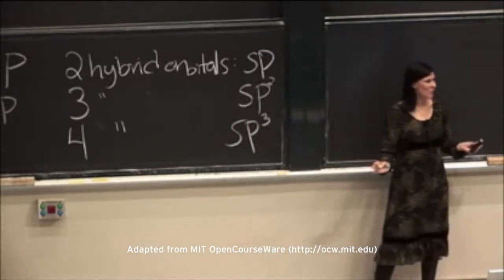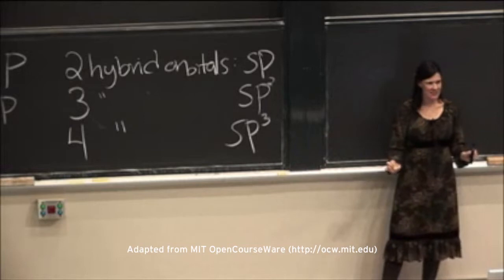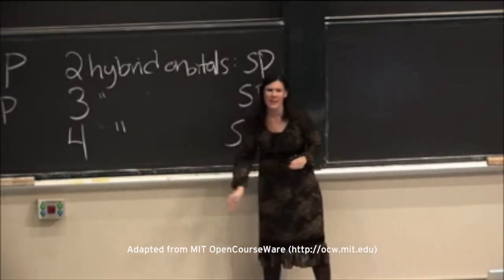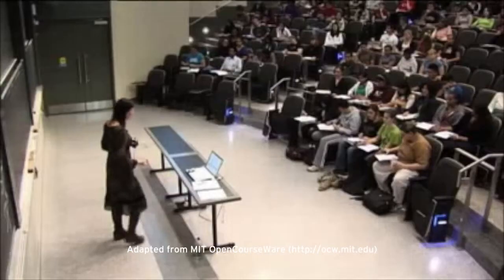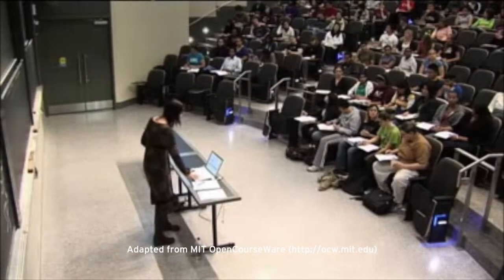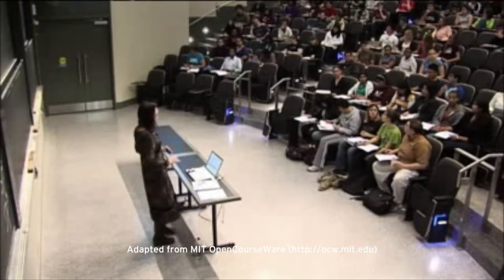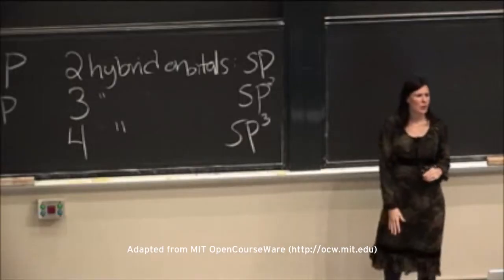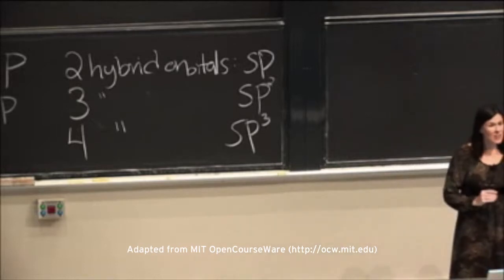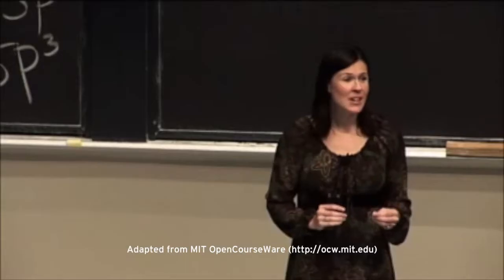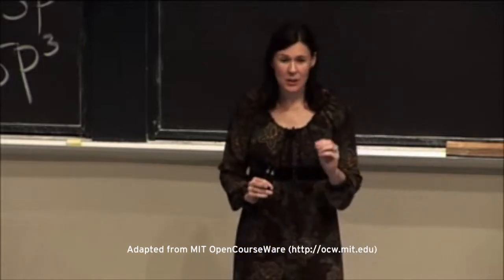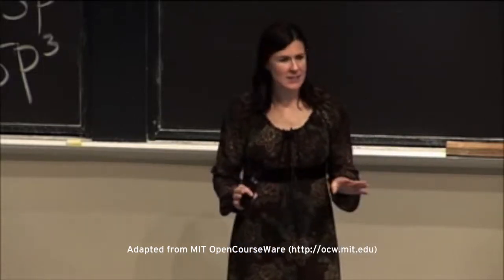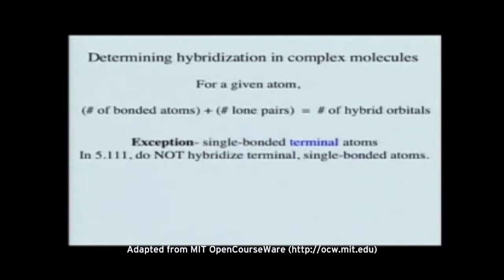So really, that's it — hopefully hybridization just got a lot simpler. But let's cover one exception first: single-bonded terminal atoms. In the case of a terminal atom with a single bond, you're not going to hybridize it. Just leave it as one of the p orbitals, unless you're talking about hydrogen, in which case it will be an s orbital that overlaps.